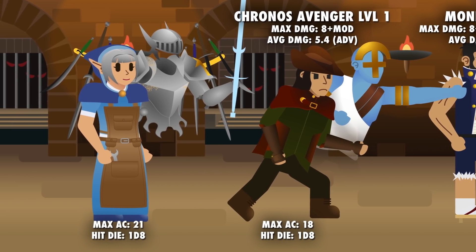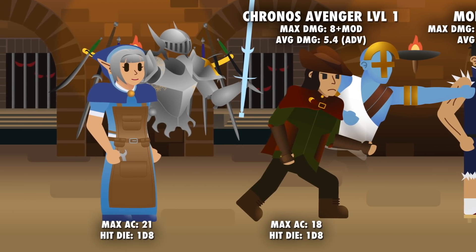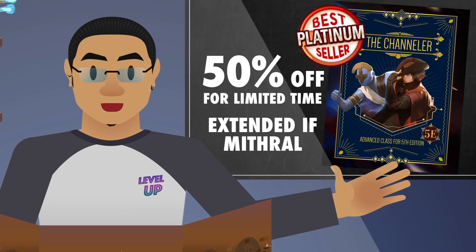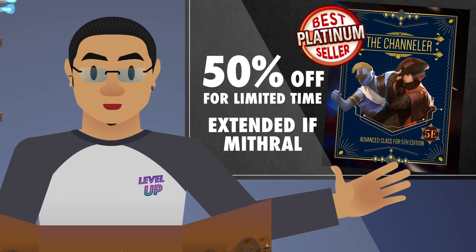So in summary, when creating a class, you need to watch out for these: the audience, complexity, fun factor, and finally, balance. Balance comes last because it is more important to make sure there are people who want to play your class and that they have fun with it. The Channeler class is having a promotional discount to celebrate it going platinum — currently 50% off for the next two weeks after this video is published. And if it hits Mithril, the discount will be extended.